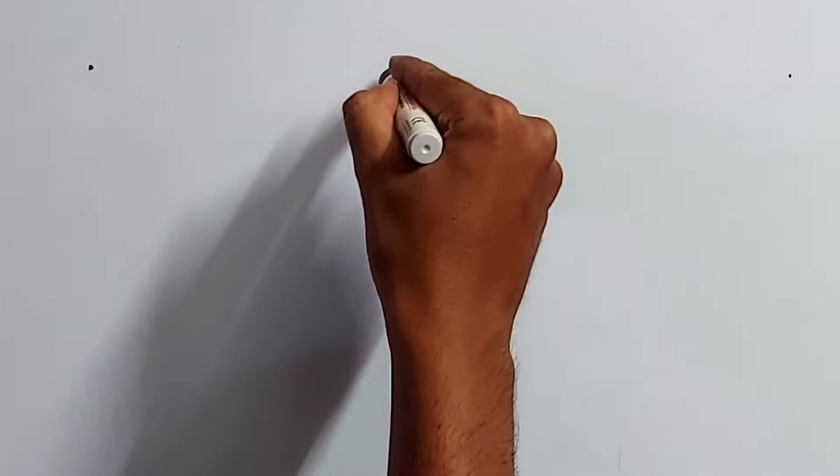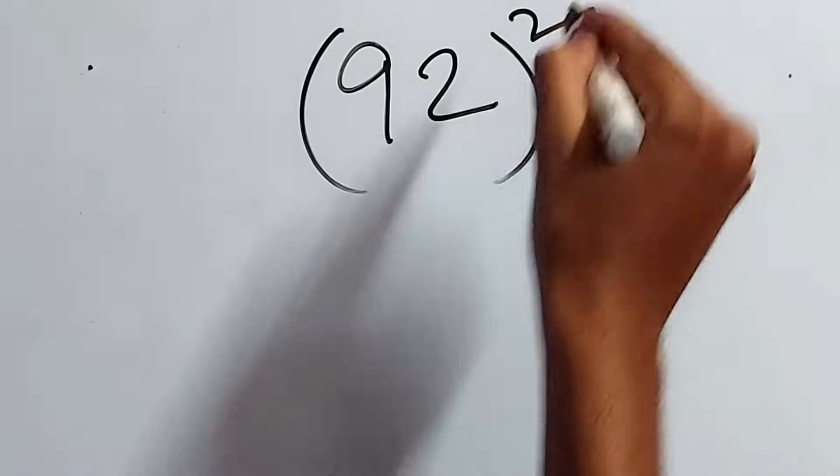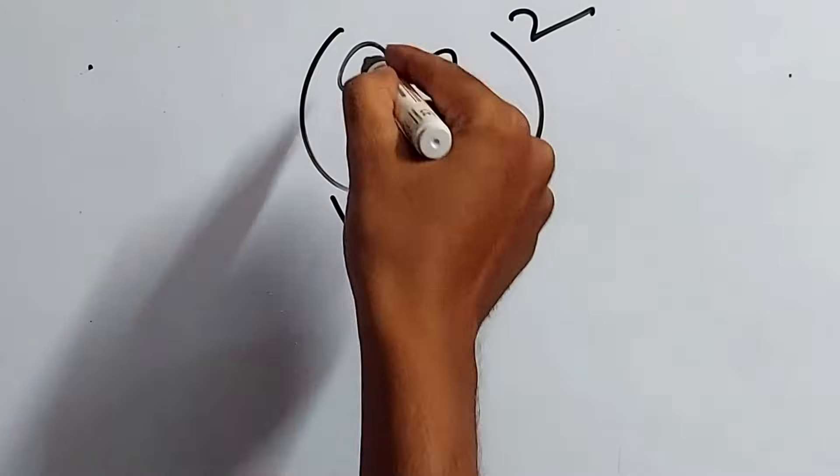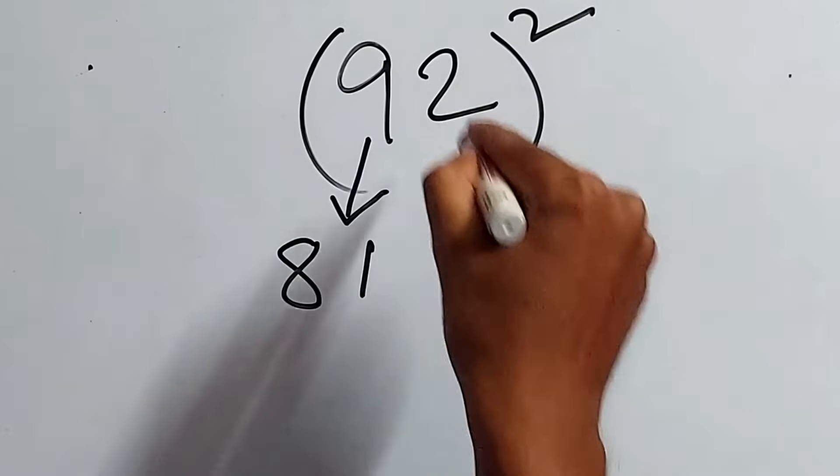And this number is very, very important. That is 92 square. Why it is important? We'll come to this later. Now, first, just multiply. I mean, just get a square of this 9. That is 81. We know this. Now, 2 square is 4. So, whenever you get this type of one-digit number, you just have to use a 0. Something like 1, 2, or 3.